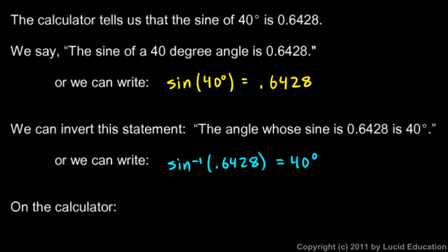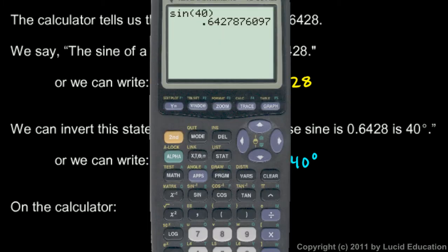Now, on the calculator, the inverse sine would look like this. On this calculator, the inverse sine is the second function on the sine key. So, I click second, sine, and it says inverse sine, and I type in 0.6428, and hit enter, and it should say 40 degrees.